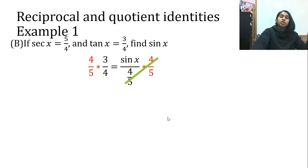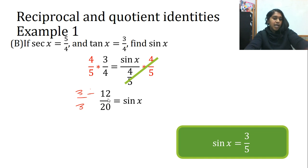On the left-hand side, I'm just going to multiply across. Four times three is 12. Five times four is 20. I can simplify that, right? Both are divisible by three. Okay, so then I end up with three fifths. Ta-da!